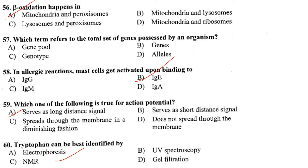In allergic reactions, mast cells get activated upon binding to IgE. Which one of the following is true for action potential? It serves as a long-distance signal — that is true for action potential. It does not spread through the membrane in a diminishing fashion.